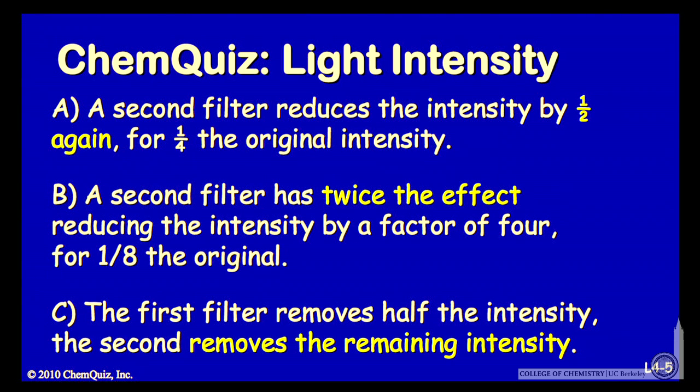Let's consider an argument for each of the possible answers. A: a second filter reduces the intensity by 1/2 again, so you have a quarter of the original intensity. B: the second filter has twice the effect, reducing the intensity by a factor of 4, so 1/8 the original.